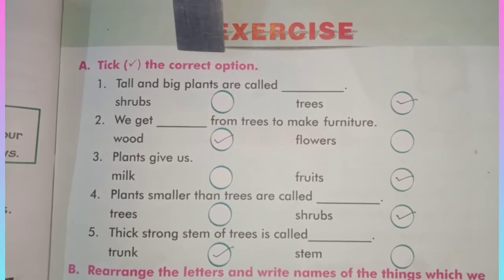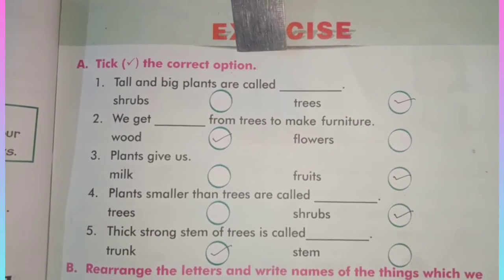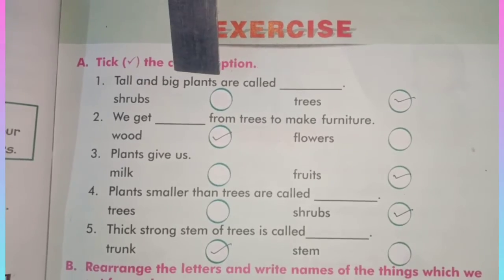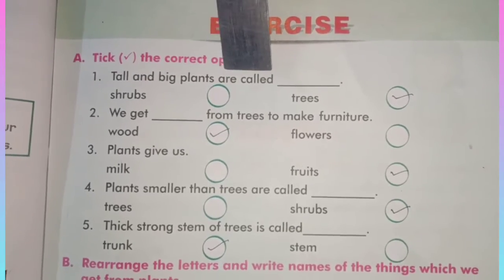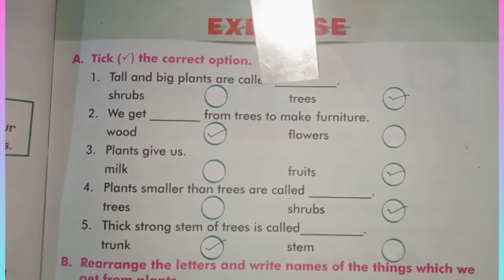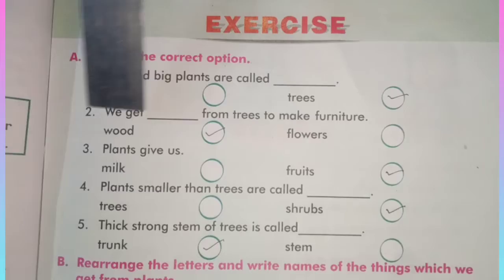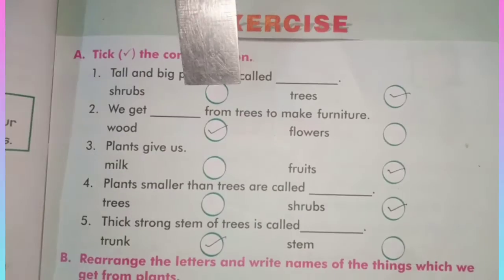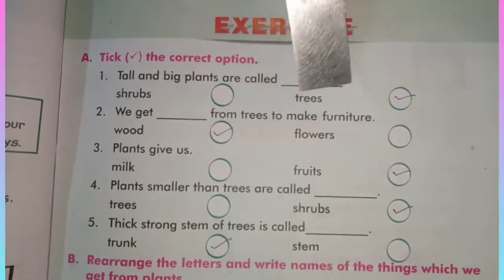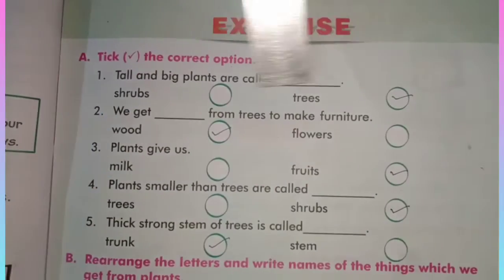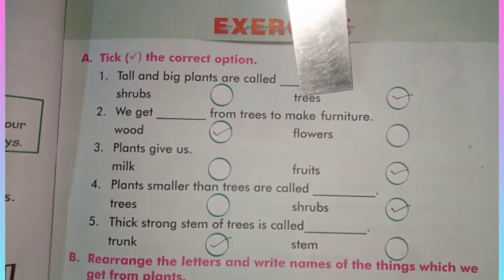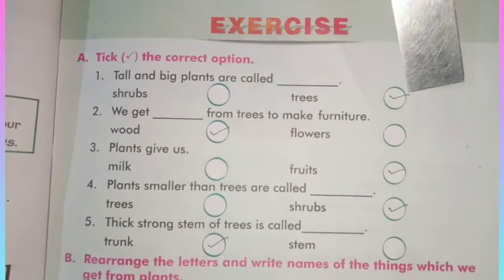Take the correct option. Question number 1: Tall and big plants are called? There are two options here. Which is the correct option students? Trees. So we will tick on trees.